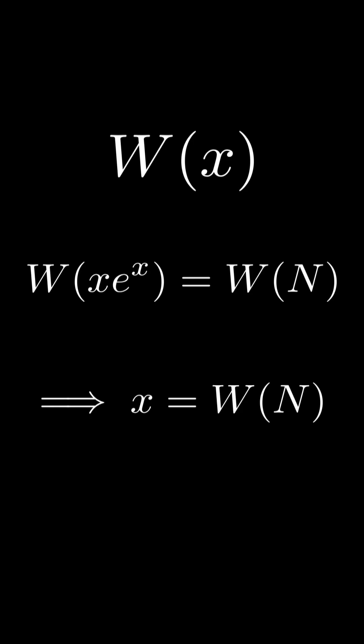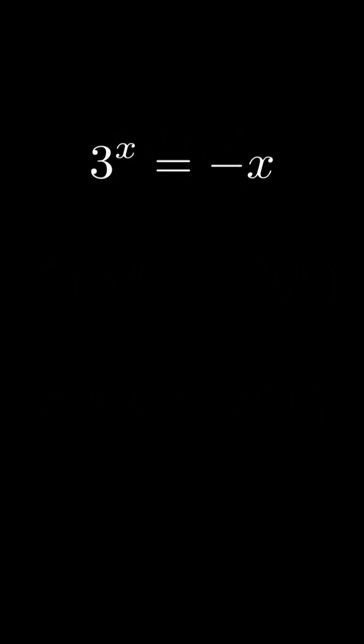Okay, now let us try solving our problem making use of the inverse relation of e to the x and natural log x. 3 to the x is basically e to the natural log 3 to the x.